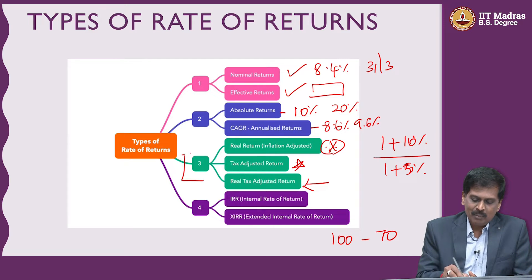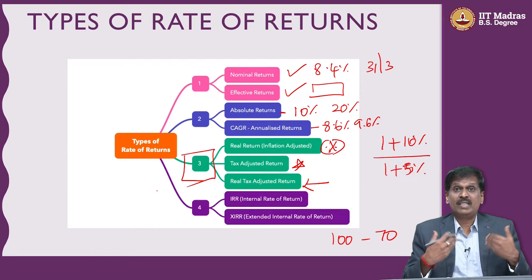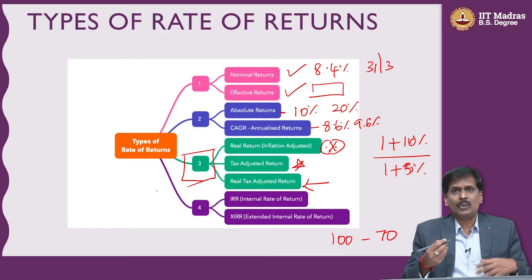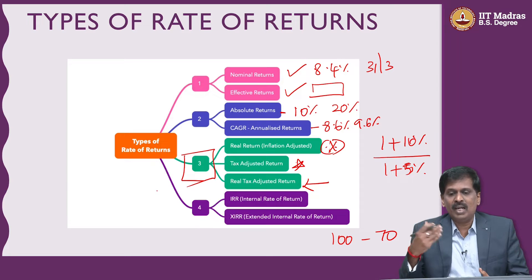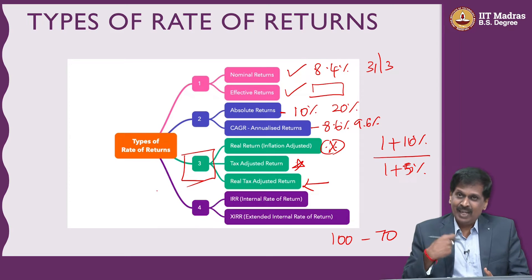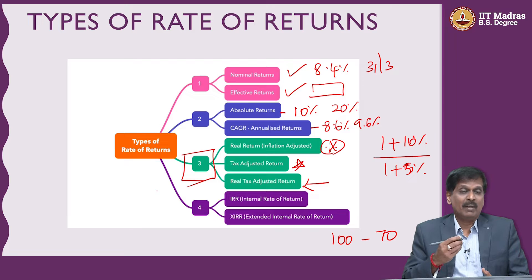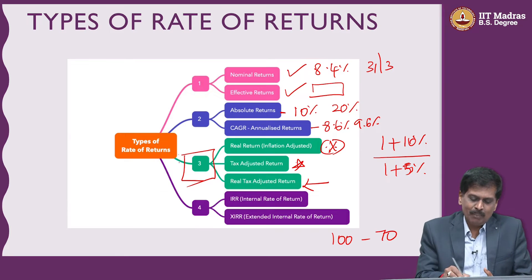Among all these, your real rate of return is very important because you have many investment avenues. When I say investment avenues, you can invest in physical assets — real estate, gold, commodities, a car, an antique, or art. Similarly, you can also invest in financial assets — you can lend money to somebody else, put money in fixed deposits, invest in businesses or startups, or even start your own firm. For all these investments, it is very important that you take into account inflation and taxes.